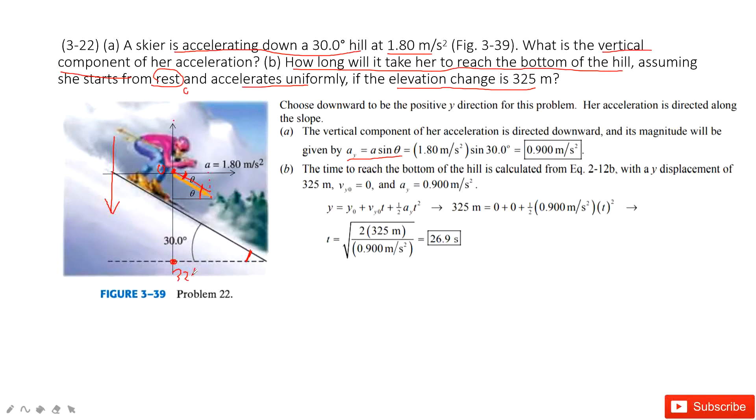325 meters. We know the initial velocity is zero, and the acceleration in the y component is a_y. We can use the kinematic equation to find the final position. The initial position is zero, the initial velocity at y component is zero, and we input the acceleration at y component. Then we solve for time.